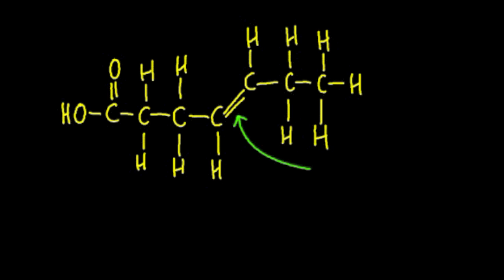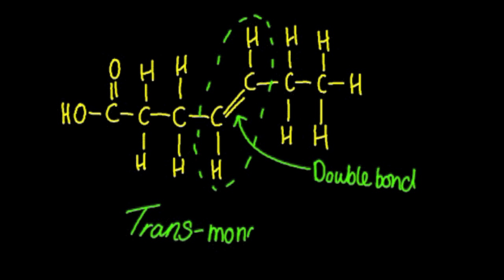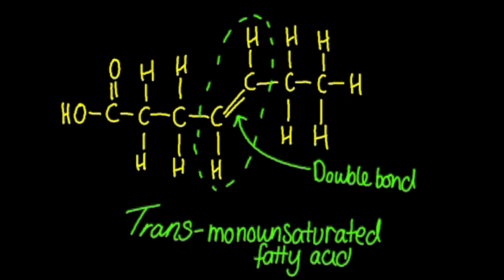Now this particular unsaturated fatty acid shown here is a trans unsaturated fatty acid. That's because the hydrogens around the double bond are on opposite sides of their respective carbons. Furthermore, you can describe it as monounsaturated because there's only one double bond in the hydrocarbon chain.